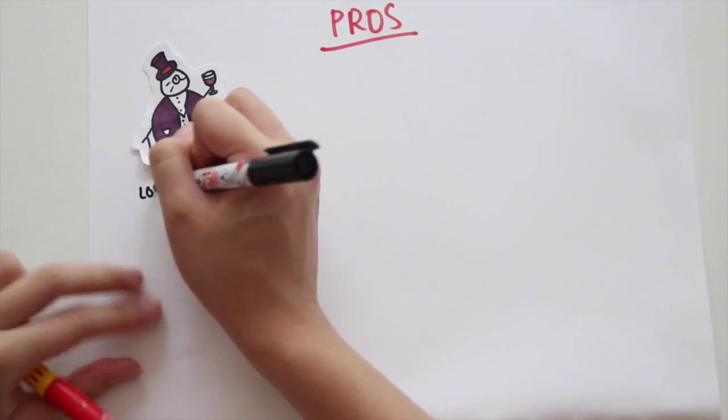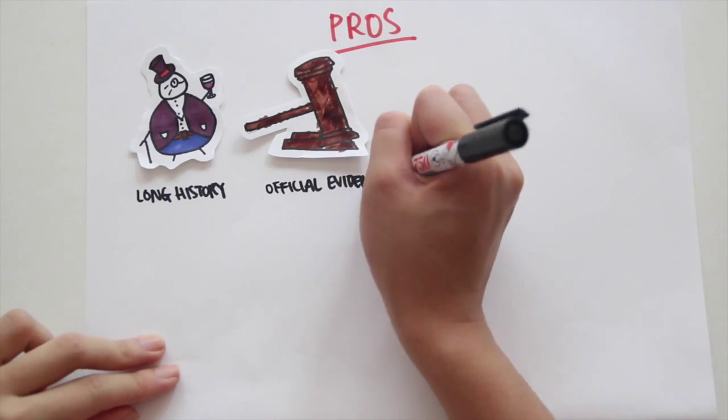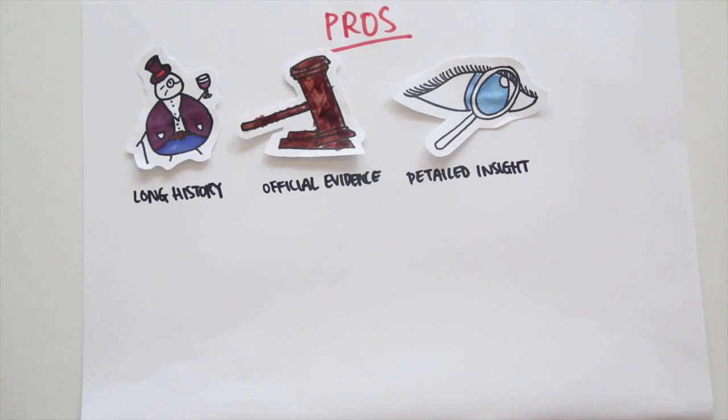Eyewitness testimonies have been used for a long time and still are being used in court as official evidence for cases. It provides vivid and detailed insight into the event or incident which can help assist investigations.